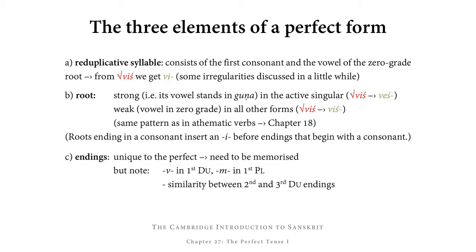In between the root and the ending, we sometimes have an i appearing, and that is the case if a root ends in a consonant and the ending also begins with a consonant. The endings are unique to the perfect and so they need to be memorized. We can note that there are some similarities to endings we already know: in the first dual we have a v appearing, whereas in the first plural there is an m appearing, and there is a formal similarity between the second and third dual endings.